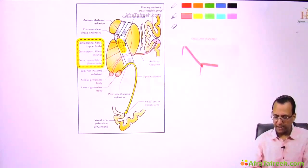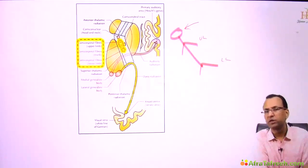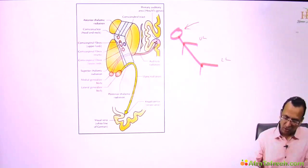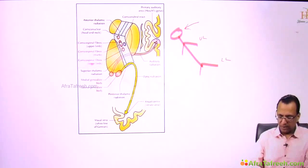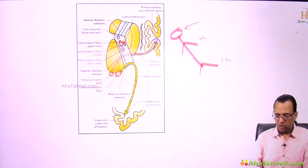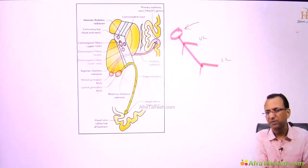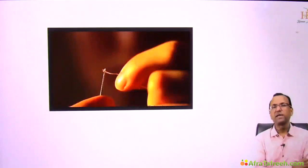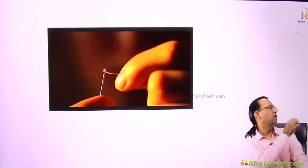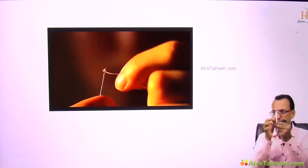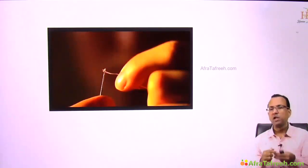The fibers of the head are passing through the genu, whereas the upper limb, lower limb, and trunk fibers pass through the posterior limb of the internal capsule. The corticospinal tract controls the upper limb, trunk, and lower limb regions — all in the posterior limb — while the head fibers are in the genu. So the total two components of the pyramidal system are the corticonuclear tract and the corticospinal tract.